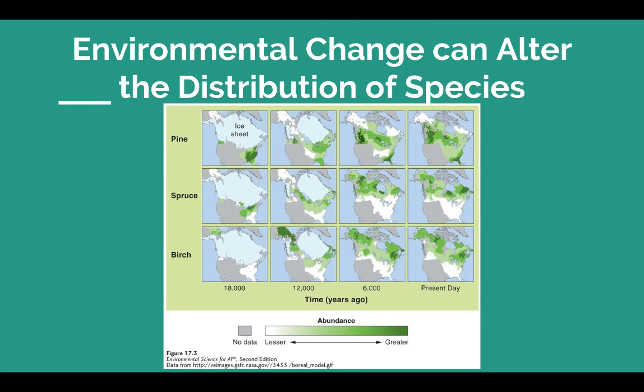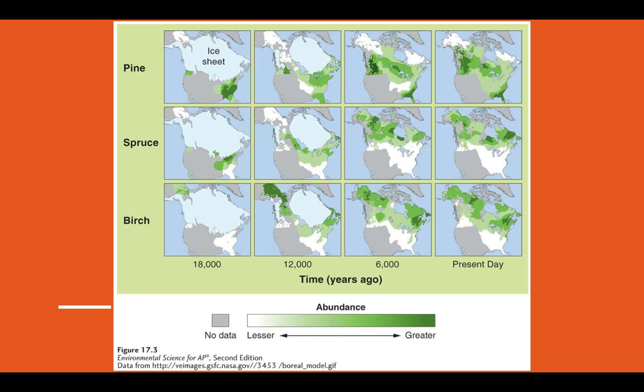Why is this important? We know the environment is changing and we know what limits a species or what it needs to survive. Environmental change is going to determine where species are distributed. A perfect example: looking at three types of trees — pine, spruce, and birch — going back 18,000 years to the last ice age. Scientists recovered pollen from lake sediments, which told them what plant species were moving as temperatures warmed following the retreat of glaciers about 12,000 years ago. There's a direct correlation — as the ice sheets retreated north, so did the different types of trees.